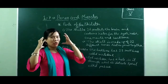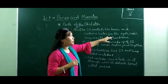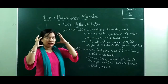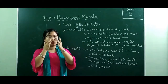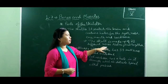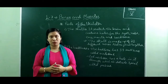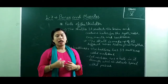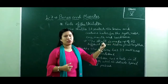The bones of your head make up the skull. The skull protects the brain and contains holes for the eyes, nose, ears, mouth, and the backbone. The skull is made up of 22 different bones joined together — 8 bones form the upper part and 14 bones make up the face.